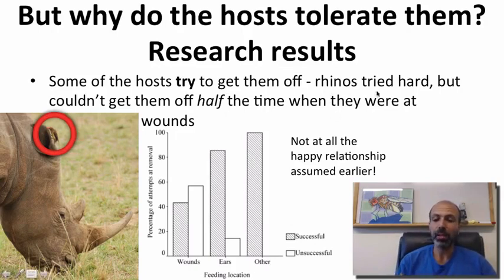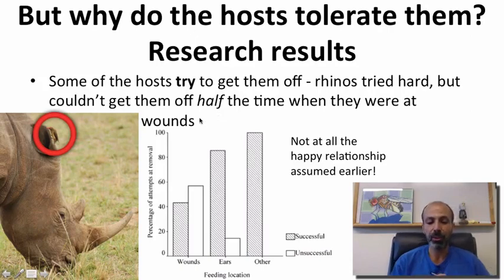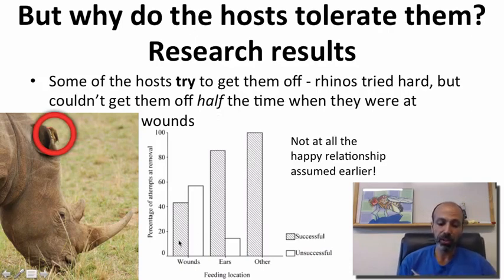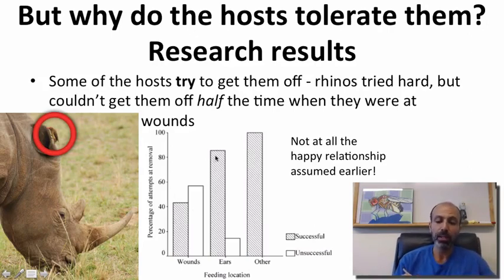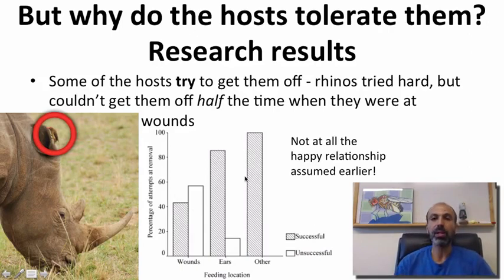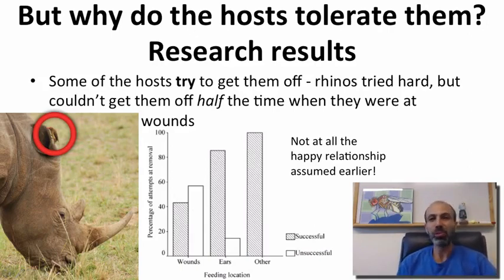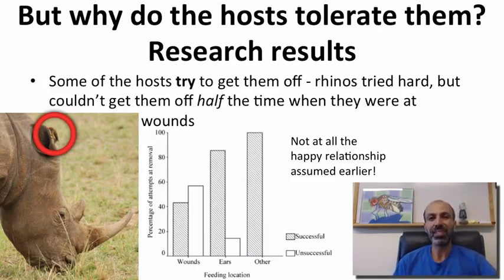Looking at the research results, it turns out some hosts do try to get the oxpeckers off but are unable to do so. In the case of rhinos, they tried quite hard but were only able to get them off about half the time when they were at wounds. In contrast, when the oxpeckers were on their ears or other places on the body, they could flick them off fairly easily. So it is not a mutualistic relationship as was previously assumed — even though that was the adaptationist explanation.